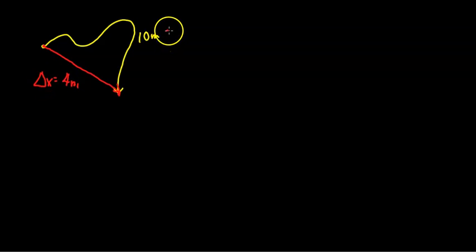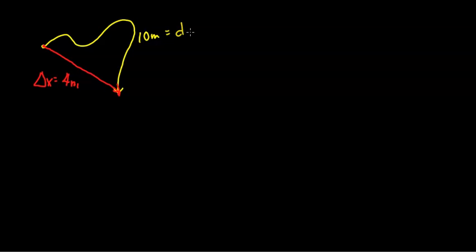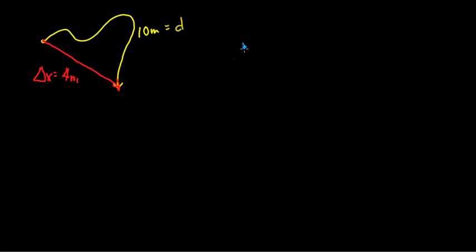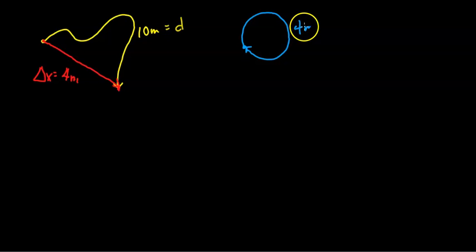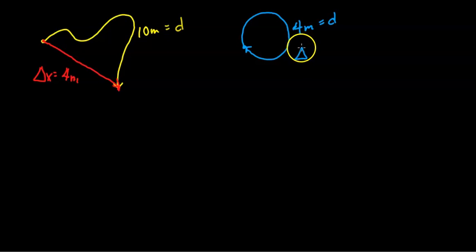Your distance is going to be how much ground you cover — it would be like the odometer reading in your car. Another example: let's say you were to go in a circle and came back to where you started. The circle might have a distance of 4 meters, so that is your distance. However, because you return to where you started, the displacement is going to be 0, because there's no change in position.